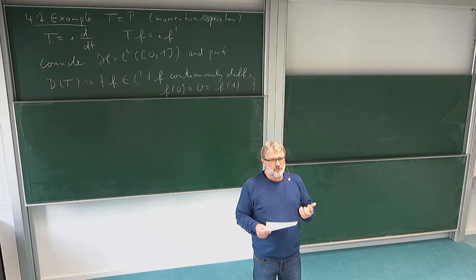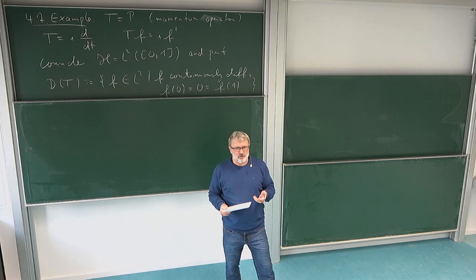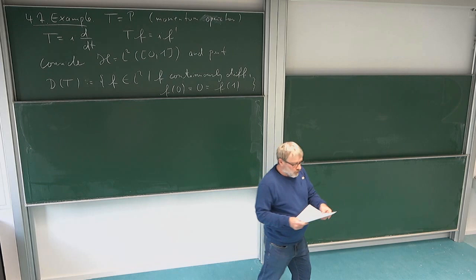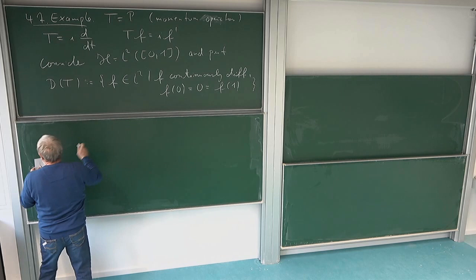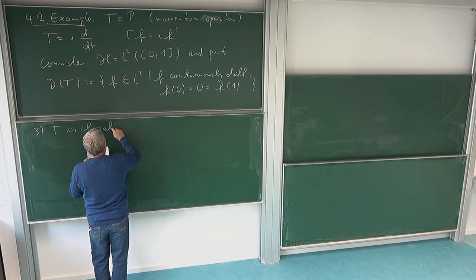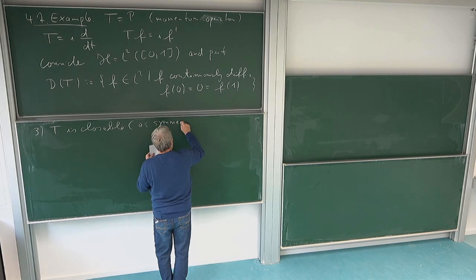We have seen that T is not self-adjoint, but of course it could be essentially self-adjoint. So maybe if we take the closure of it, then we get a self-adjoint operator. And of course we know that our operator is closable because it is symmetric. So we know that T is closable just because it's symmetric.